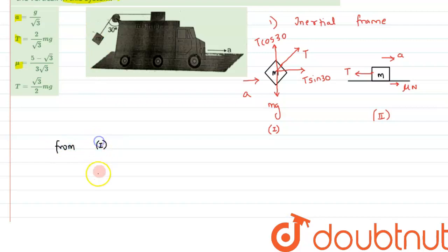From figure 1, we are writing it, we can write, T cos theta will be balanced by mg. Alright, and let's say this is our equation number 1, and T sin theta, by using Newton's second law, we can say, T sin theta will be equal to mass into acceleration.